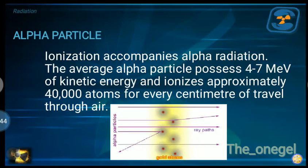Because of this intense ionization, the energy of an alpha particle is quickly lost — it has a very short range in matter. In air, alpha particles can travel approximately 5 centimeters. In soft tissue, the range may be less than 100 micrometers. Because the alpha particle is so massive, it expends energy rapidly for every centimeter traveled, just like a person carrying a heavy load cannot travel very far.